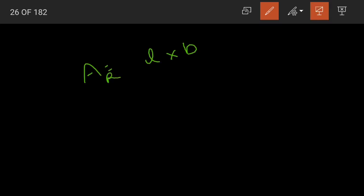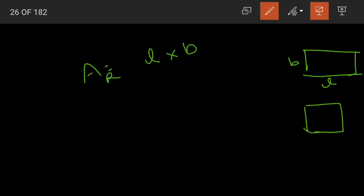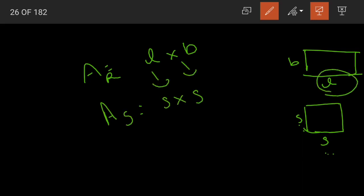In the same way, area of a rectangle is equal to length into breadth. For a square, all four sides are equal, so there is no separate length and breadth — everything is a side. So for the area of a square, length becomes a side and breadth also becomes a side. The formula becomes side into side.